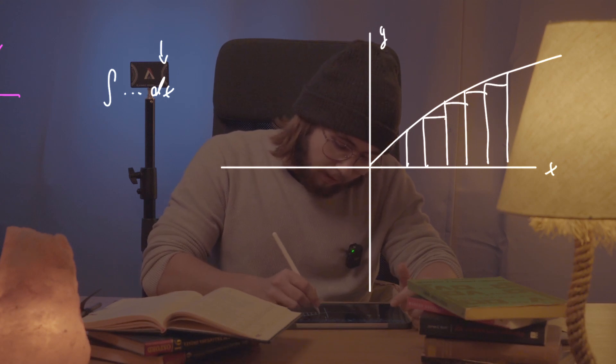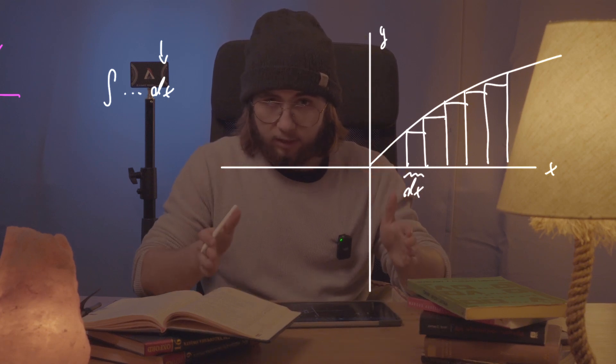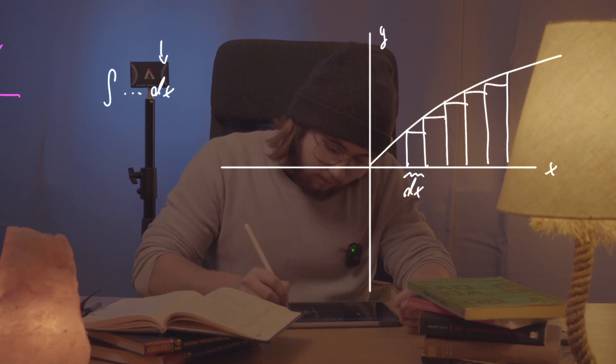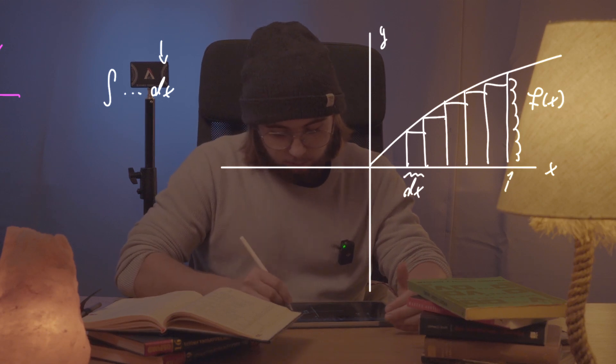And so what we have to do is divide this area into some rectangles whose width is going to be the dx, the change in x along the x-axis, and whose height is going to be the function's value, the value of the function evaluated at one of those endpoints of those intervals dx's.